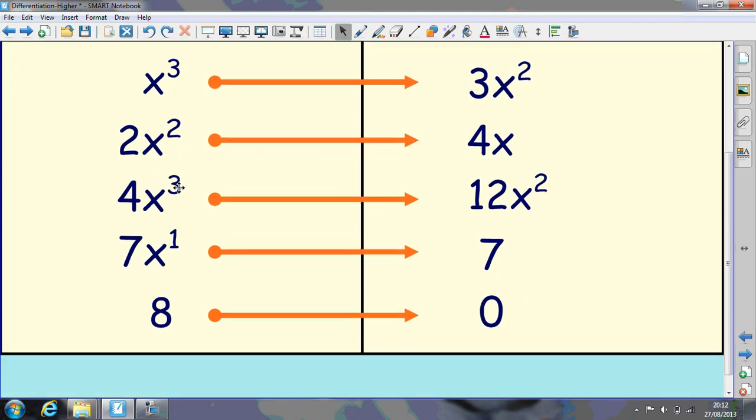Here we have 4x cubed to differentiate it. Multiply down by 3 and reduce by 1 to get 12x squared. In this case we've got 7x to the power of 1. Multiply down by the power, reduce it by 1 to get 0. So x to the power of 0 is just 1, so that goes to 7 times 1 which is 7.